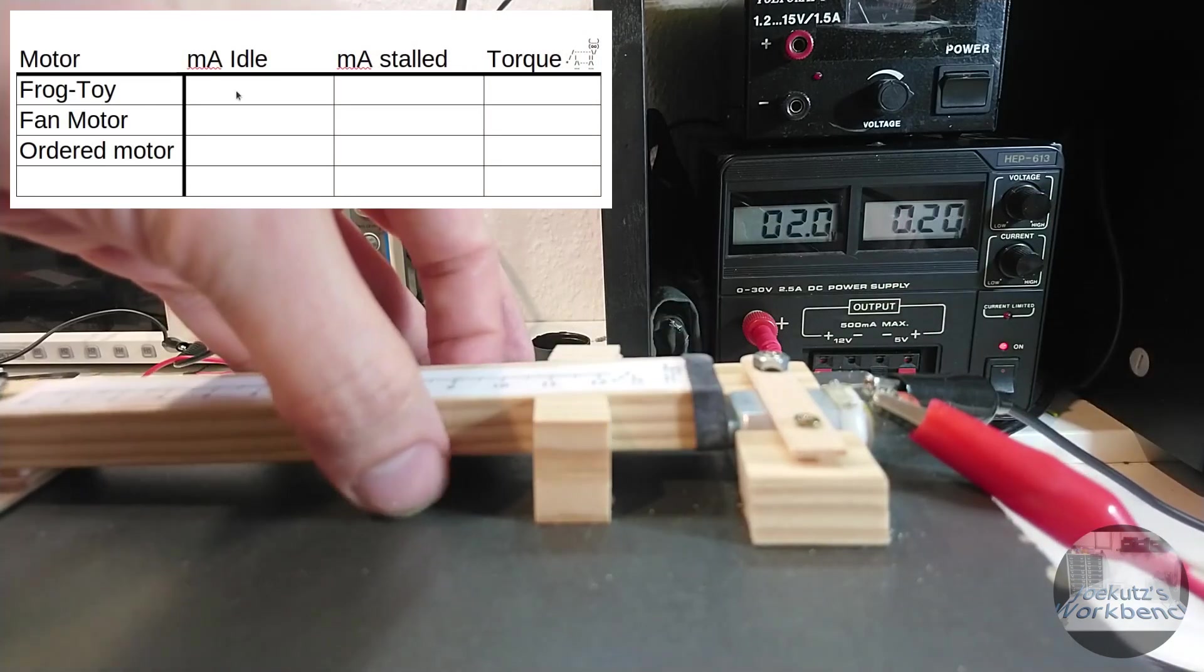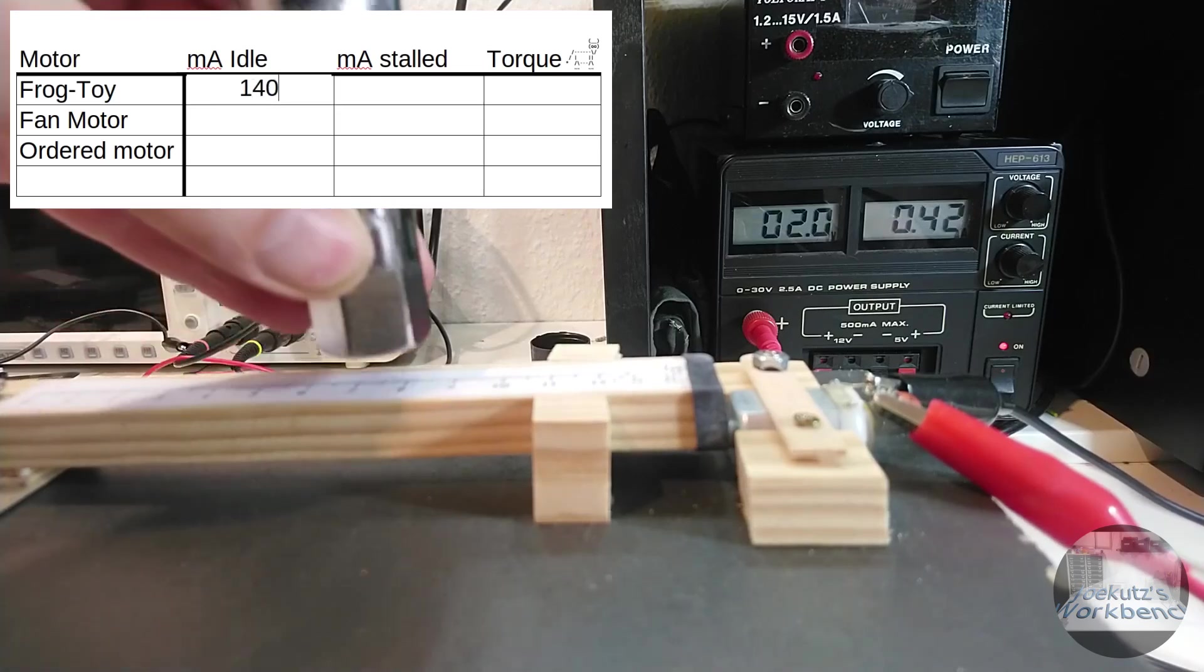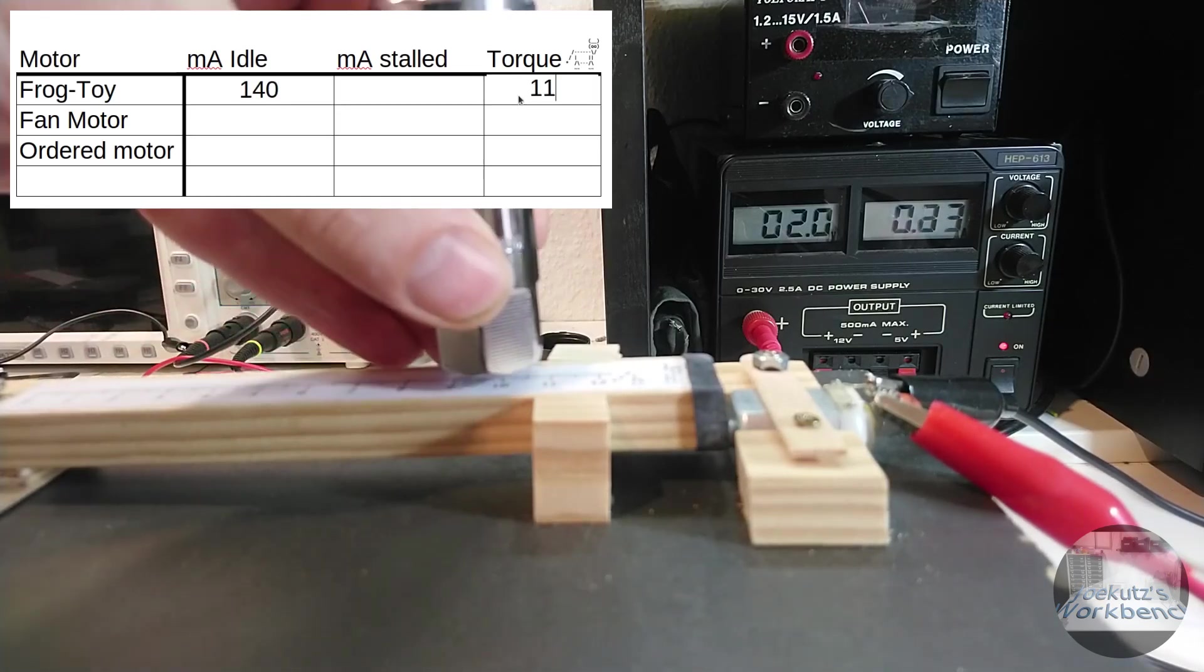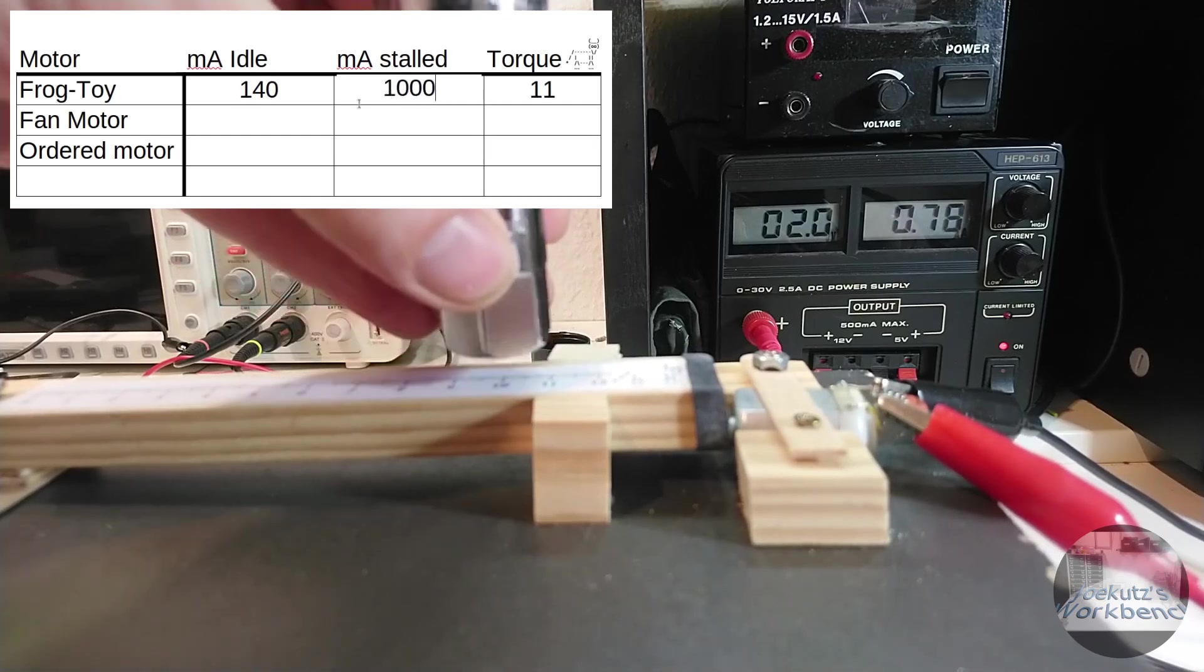Here is my original toy motor. It uses 140 milliamps idling. I need to shift the weight on my rig all the way to the right to stall it. Then it takes 1 amp.